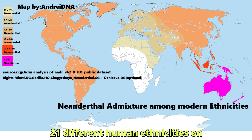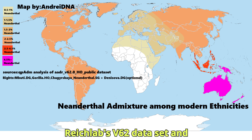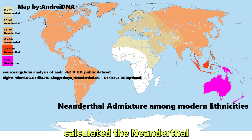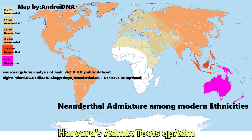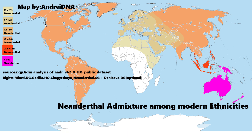For this video, I have analyzed 21 different human ethnicities on Reich Lab's v62 dataset and calculated the Neanderthal contribution in these ethnicities using Harvard's ADMIXTURE tools. Now let's go through each of these ethnicities, starting from the lowest Neanderthal contribution to the highest.